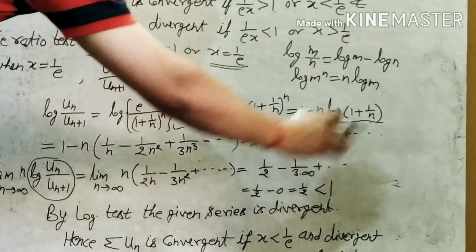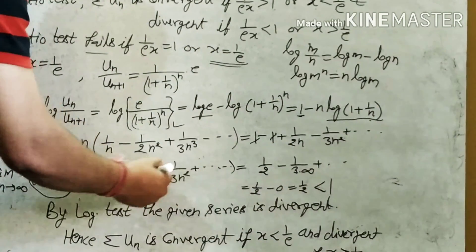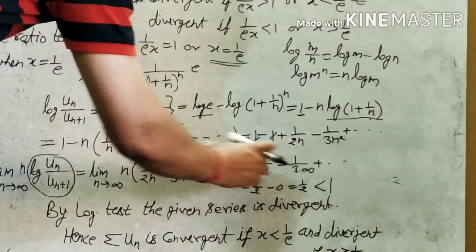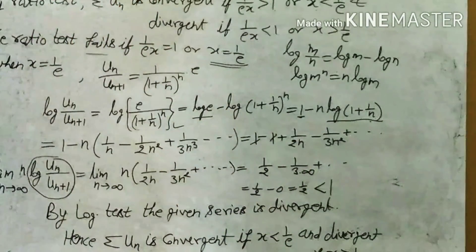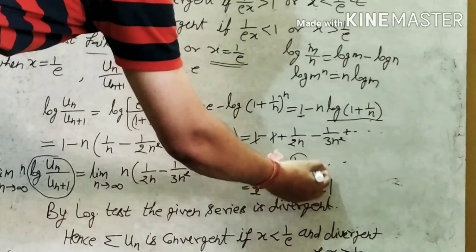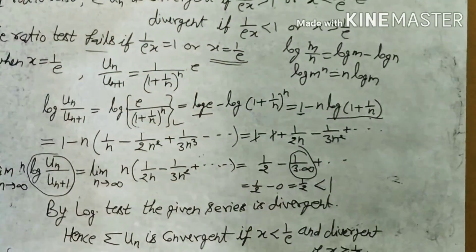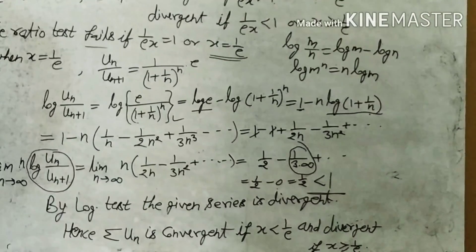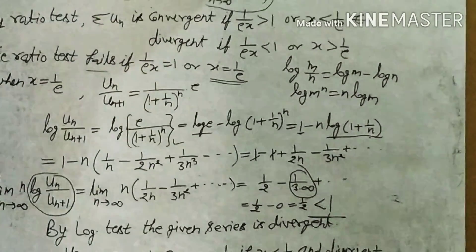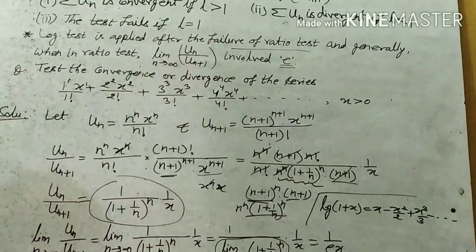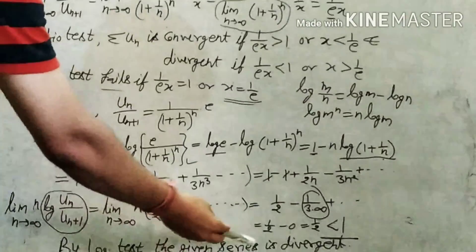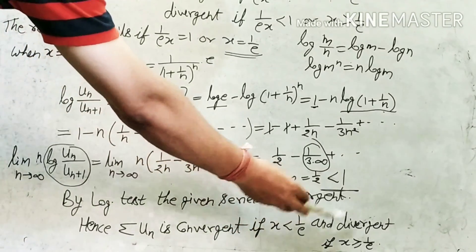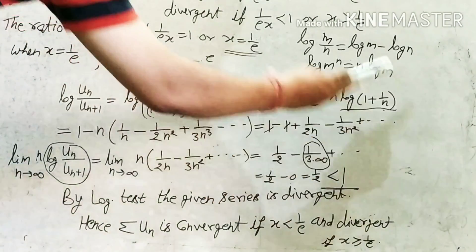Multiplying by n: n·log(un/un+1) = 1/2 − 1/(3n) + ... Taking the limit as n→∞, 1/(3n) → 0, so the limit equals 1/2. Since l = 1/2 < 1, by the logarithm test, summation un is divergent. Hence, the series is convergent if x < 1/e and divergent if x ≥ 1/e.